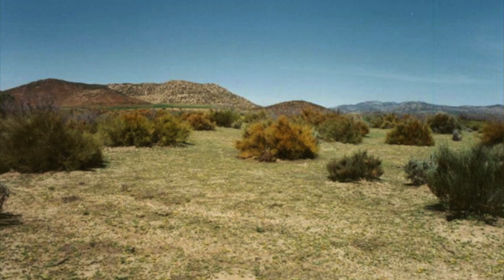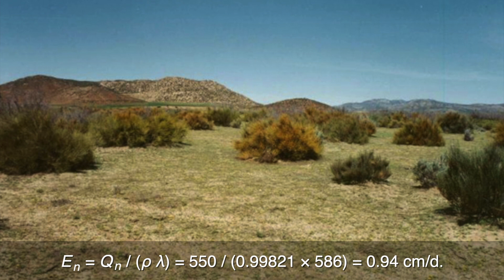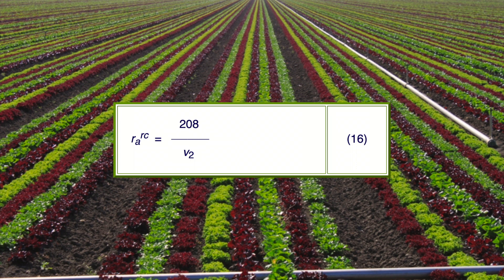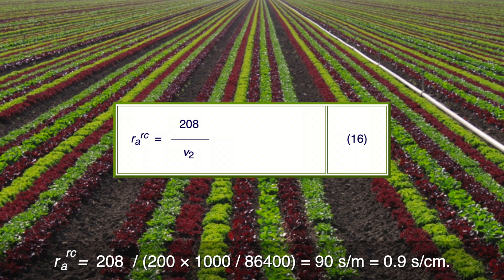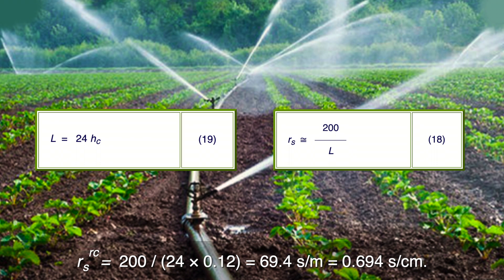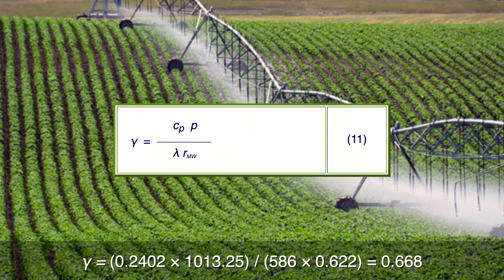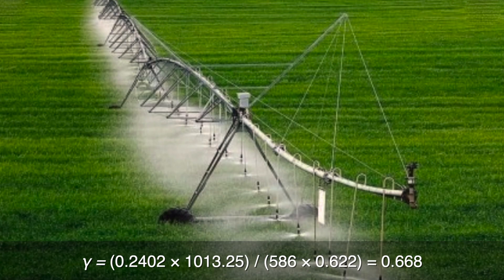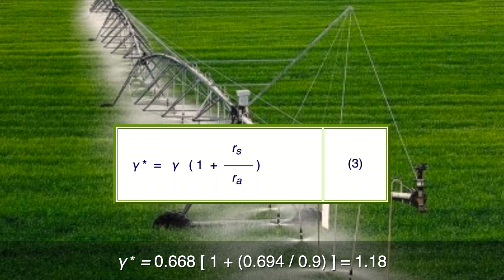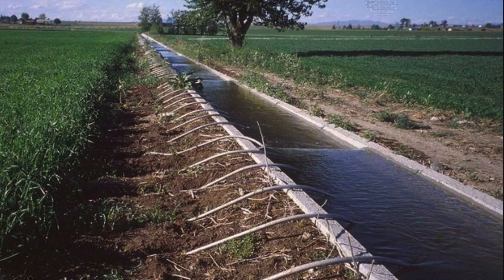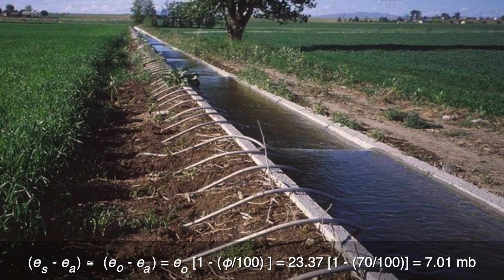The net radiation in evaporation rate units is calculated. Using equation 16, the external resistance of the reference crop is determined. The internal resistance of the reference crop is also determined. From equation 11, the psychrometric constant is found. From equation 3, the modified psychrometric constant is computed. The vapor pressure deficit is then calculated.